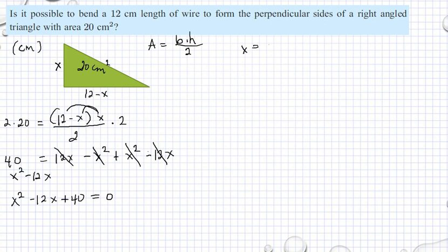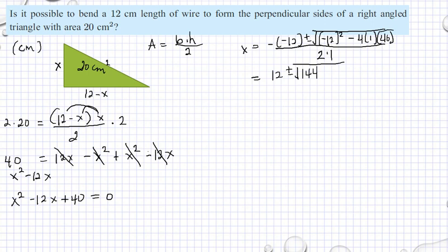we have X equals negative negative 12 plus or minus the square root of negative 12 squared minus 4 times 1 times 40, divided by 2 times 1. Then we have 12 plus or minus the square root of 144 minus 160, divided by 2.